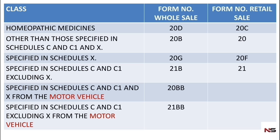For getting license for drugs specified in schedule C and C1 excluding X, for retail it's 21, for wholesale 21B. With motor vehicle, specified in schedule C and C1 and X, 20BB for wholesale. Specified in schedule C and C1 excluding X using motor vehicle is 21BB for wholesale.